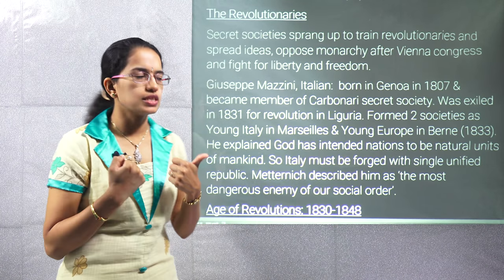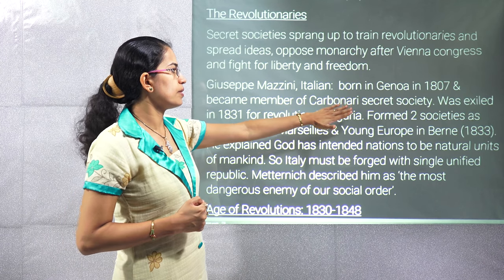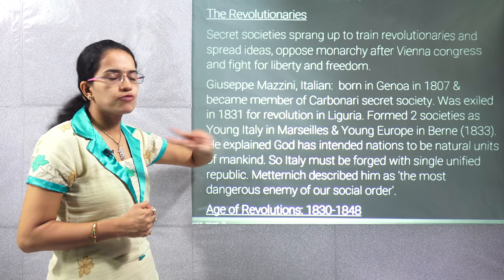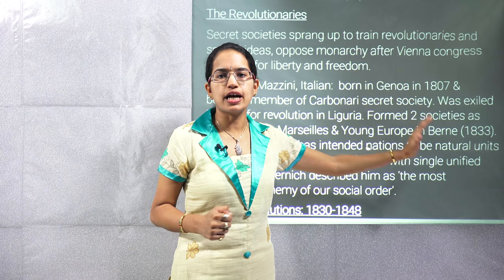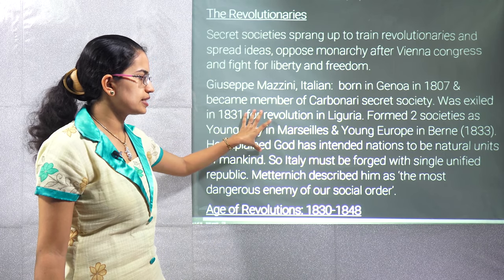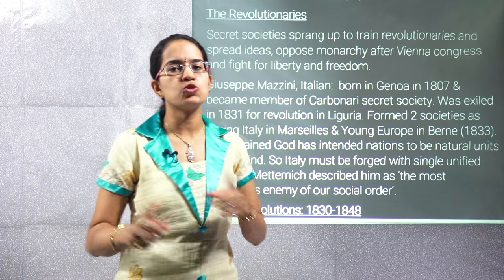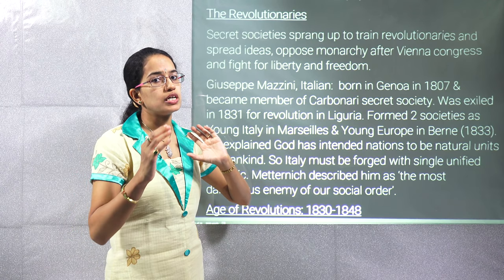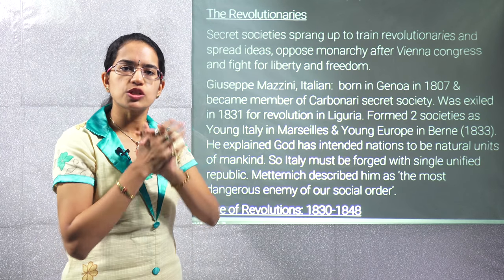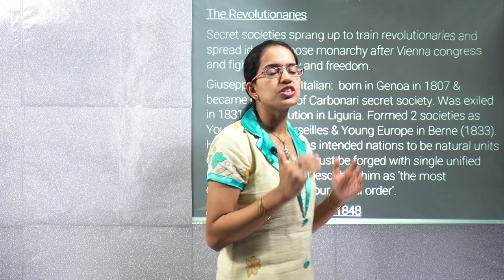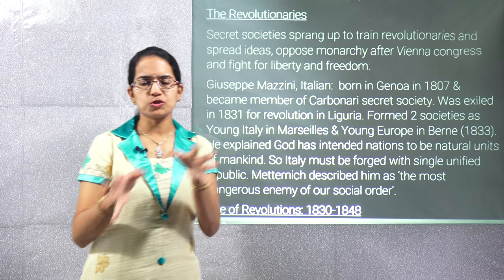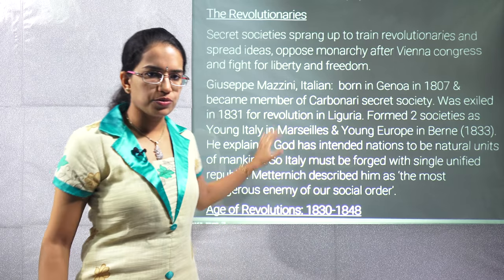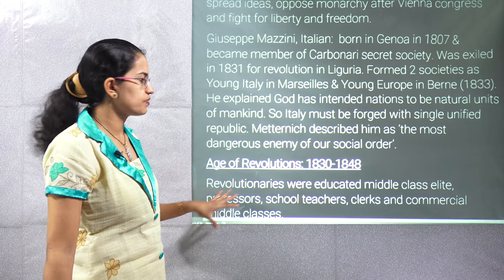One such revolutionary was Mazzini — an Italian born in Geneva, and a member of the Carbonari secret society. He was exiled for the revolution that took place in Liguria and formed two important societies: Young Italy in Marseilles and Young Europe in Bern. He explained that God had intended nations to have natural boundaries, and those should be maintained by mankind. His idea was working for the unification of Italy. Italy during that time was divided into seven different states; the Papal States and Sardinia were among those. Sardinia had constant conflict and ultimately defeated Austria.